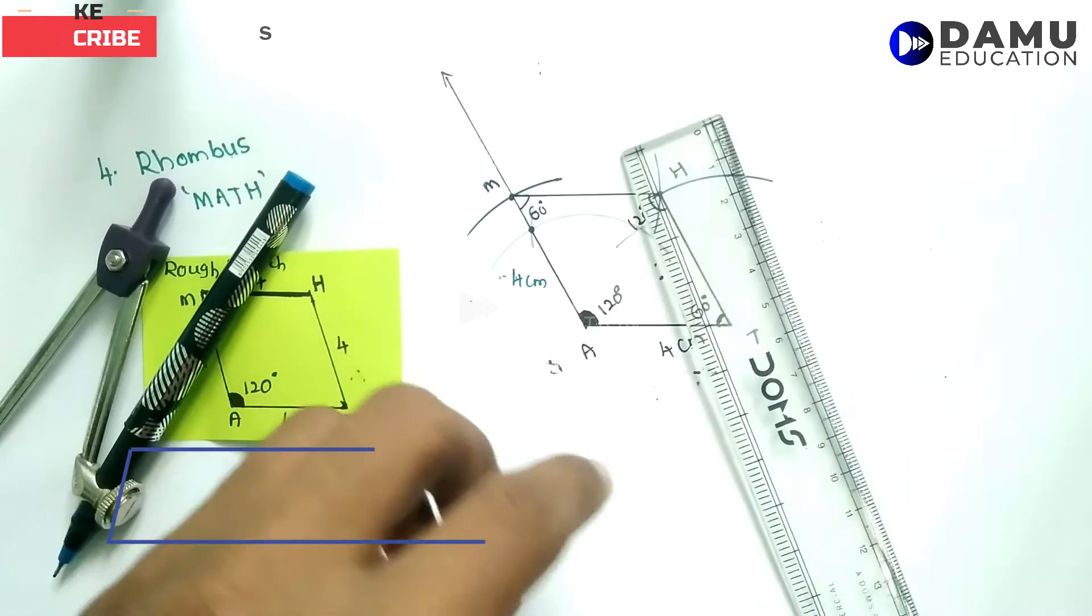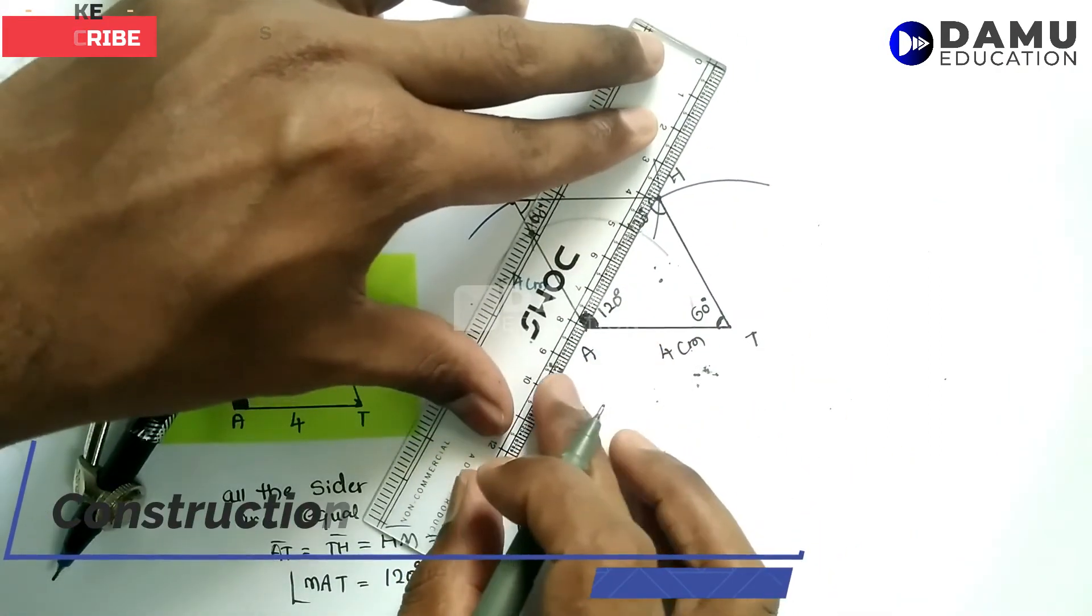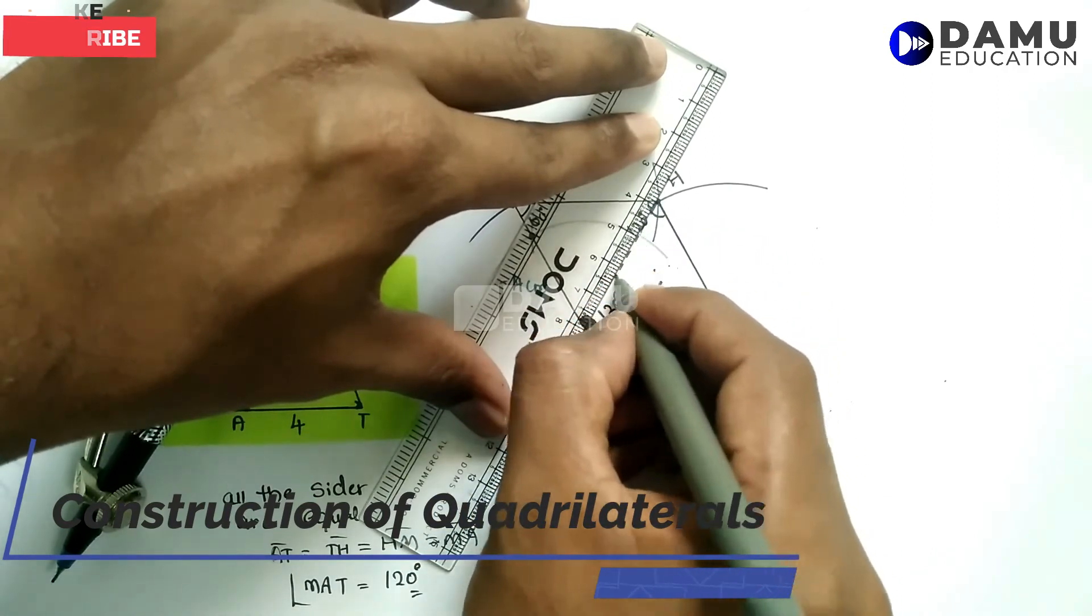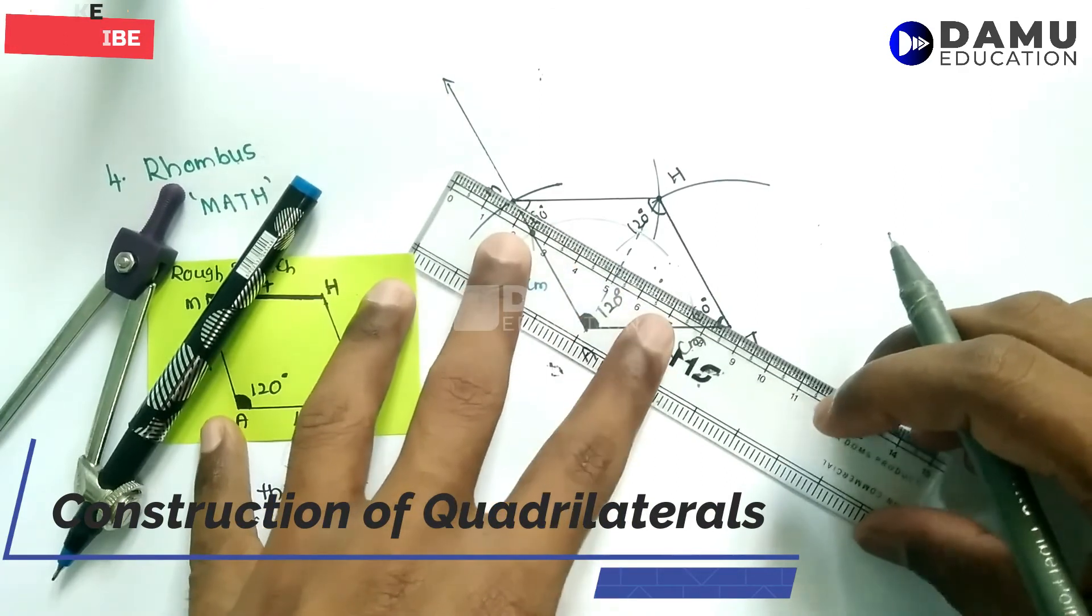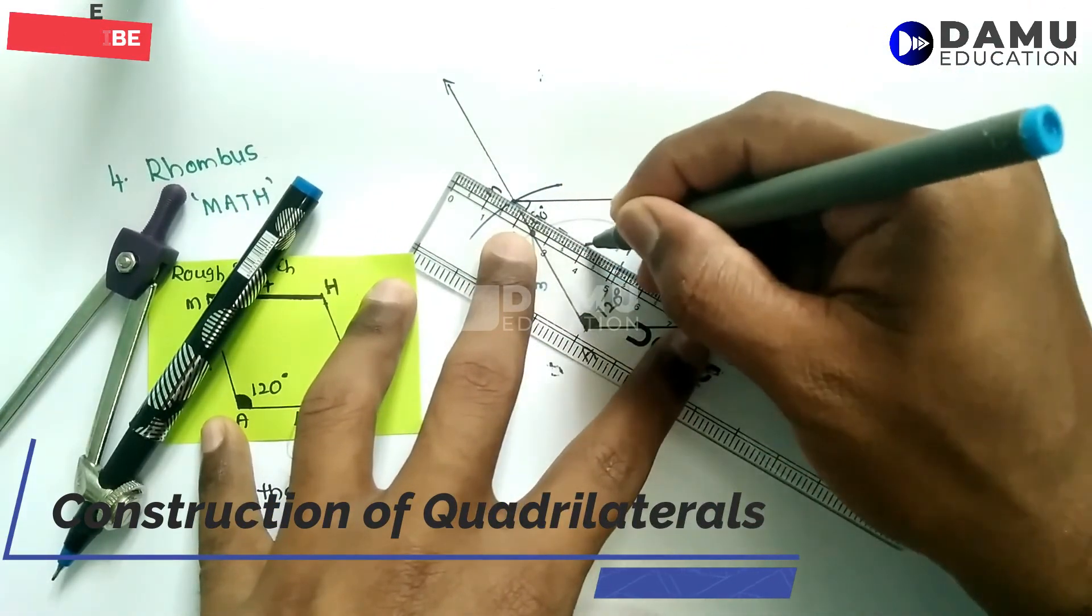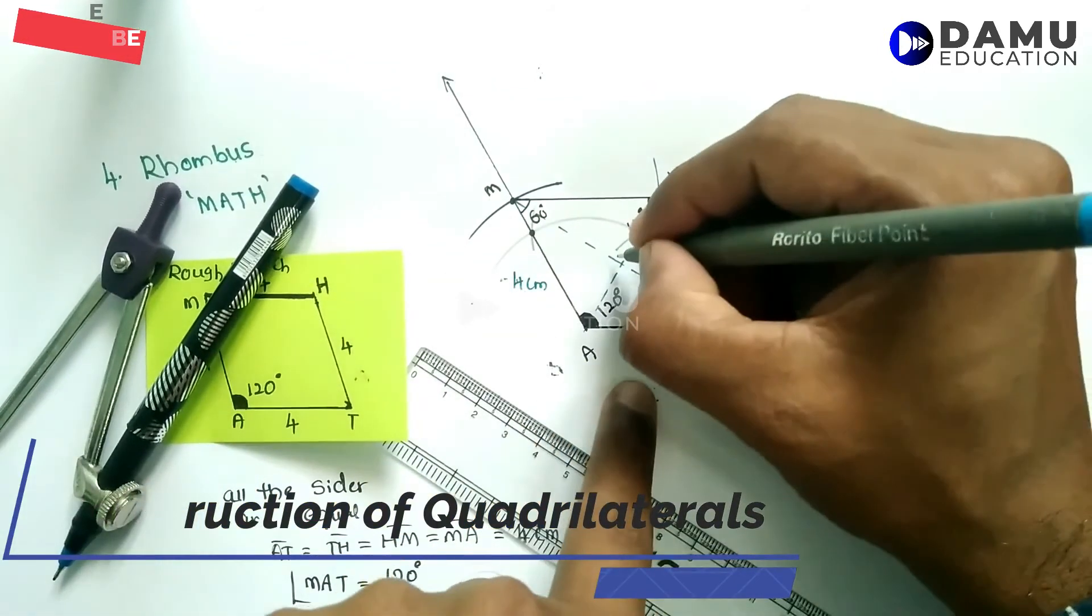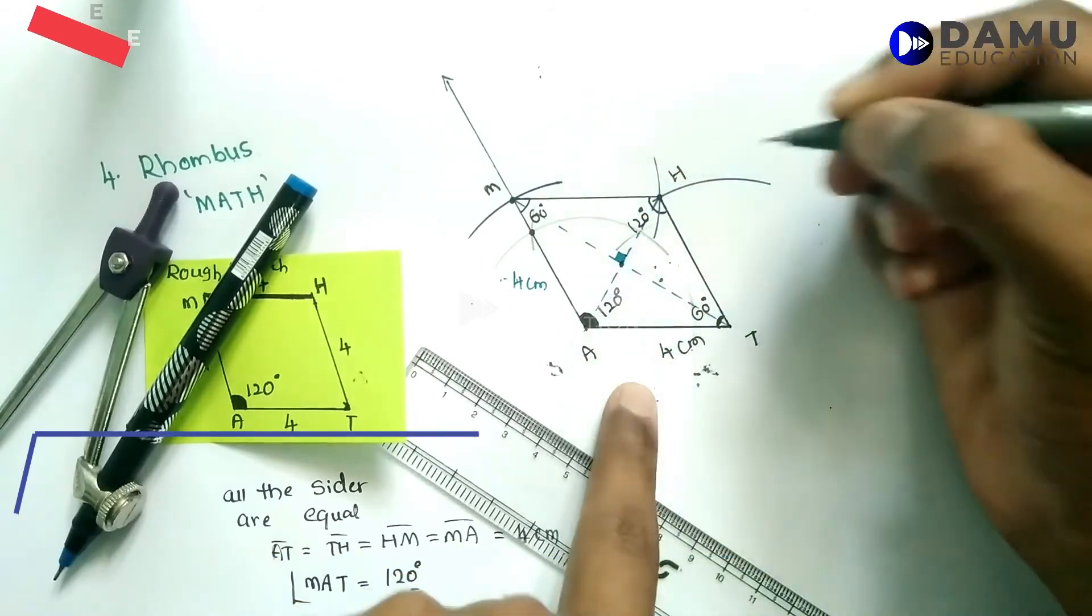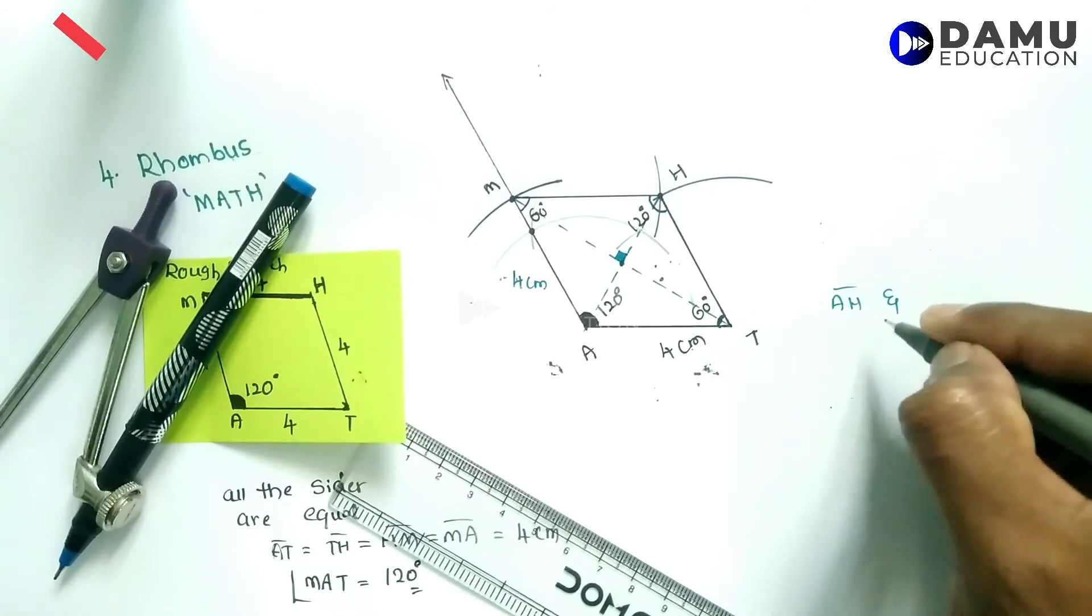If you want to draw diagonals, we can draw them by joining opposite vertices. This is one diagonal and this is another. The diagonals of a rhombus make 90 degrees at the center.